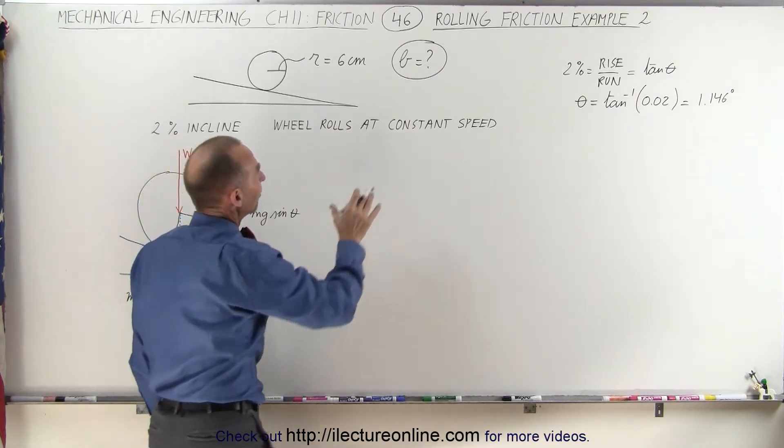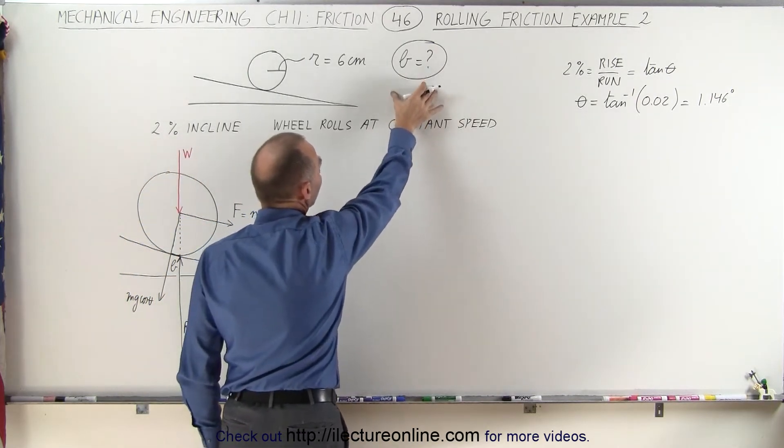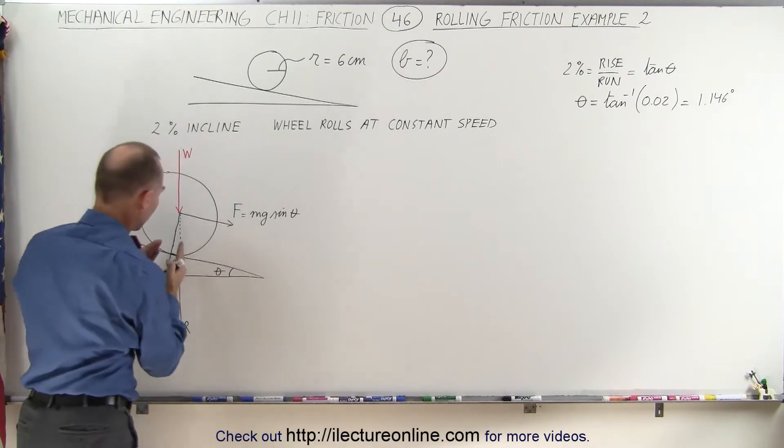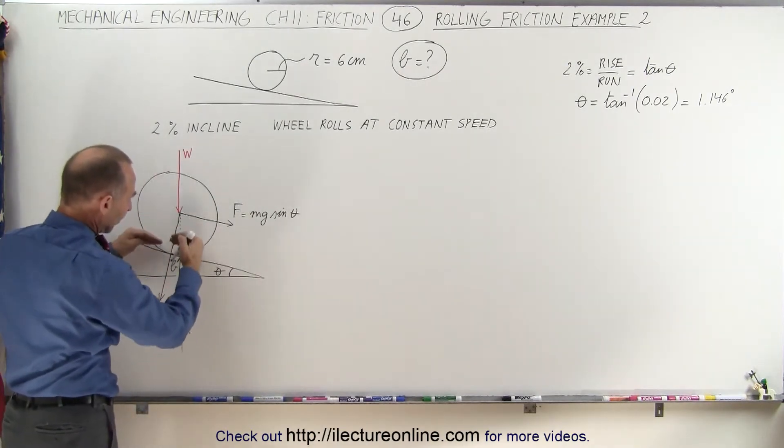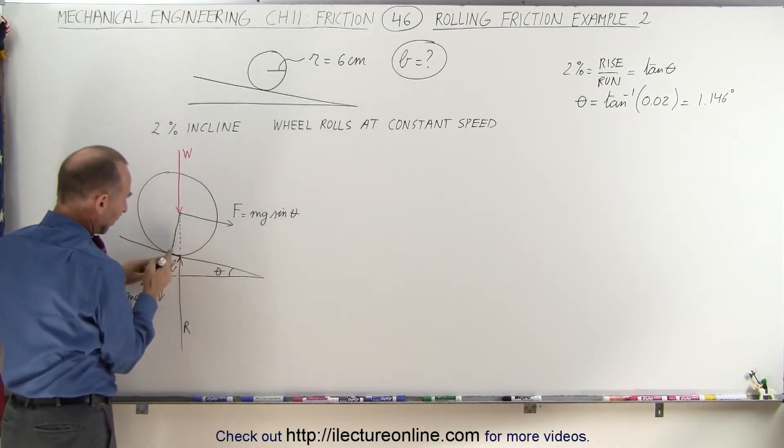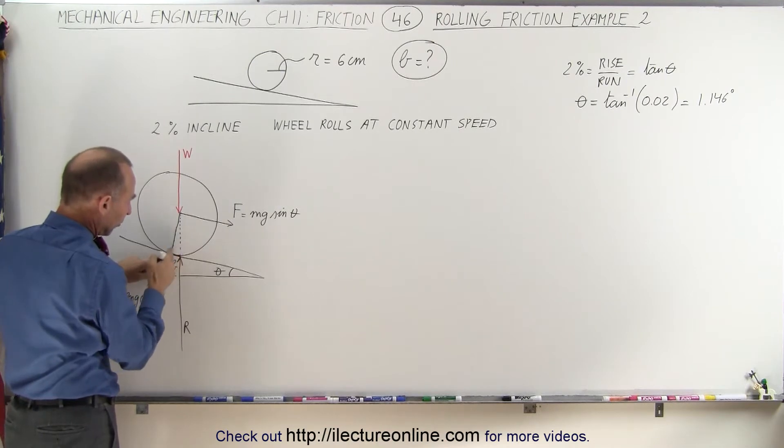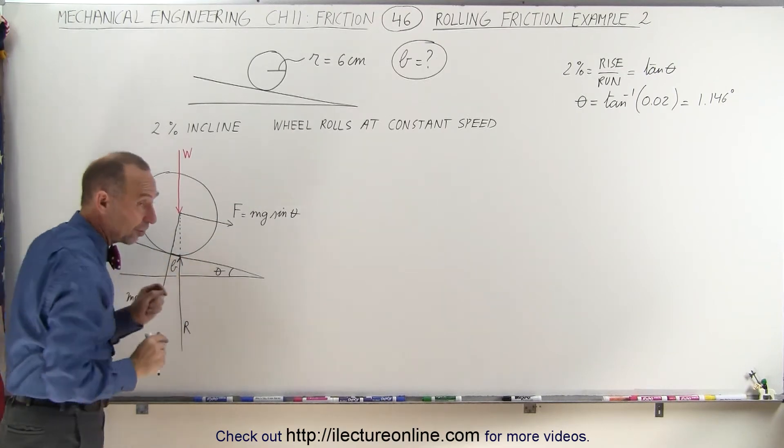Now what we're trying to do here is we're trying to find the coefficient of rolling friction. We're trying to find the distance that the tire or the wheel is being compacted, so that's the distance from where the tire touches the surface from the point directly below the center and where it no longer touches the surface. We're looking for this distance.